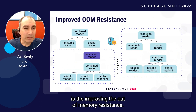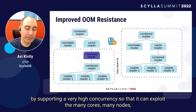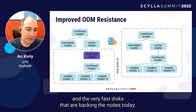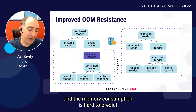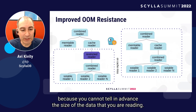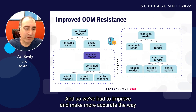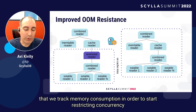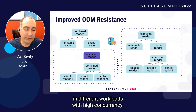Another feature we've worked on is improving out-of-memory resistance. ScyllaDB delivers very fast performance in part by supporting very high concurrency, exploiting many cores, many nodes, and very fast disks. But the price for high concurrency is higher memory consumption, which is hard to predict because you cannot tell in advance the size of the data you are reading — you might be reading 100 bytes or 10 megabytes. We've had to improve and make more accurate the way we track memory consumption in order to start restricting concurrency before we run out of memory. ScyllaDB 5.0 will be a lot more resilient across different workloads with high concurrency.